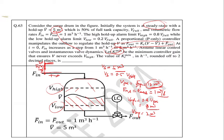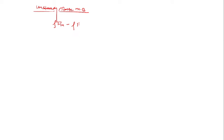So first we need to find the transfer function for this system — output upon input, where output is volume V and input is F_in. We find the transfer function in terms of deviation variables: V-bar(s) upon F_in-bar(s). To find the transfer function, we write the unsteady state material balance: rho·F_in minus rho·F_out equals d(rho·V)/dt.